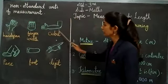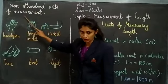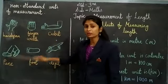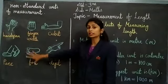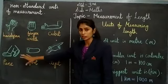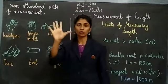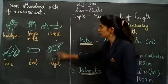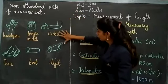So first of all, let us learn something about non-standard units of measurement. These are pictures of some measurements which earlier we used to take an object's measurement. Like in the first picture you can see handspan is given. If I want to take the measurement of this blackboard, I will use my handspan, like this.